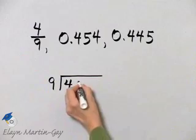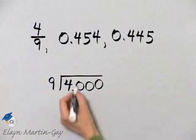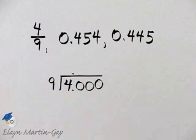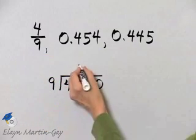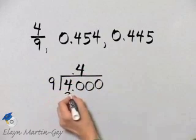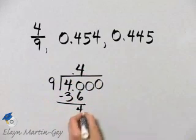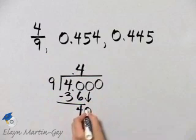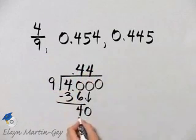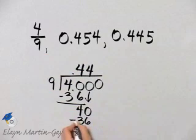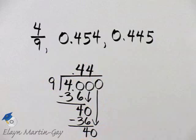And I'll put a decimal point and some zeros down. And now here's the decimal point in my quotient. How many times does 9 divide into 40? 4 times 9 is 36. And my difference is 4. Bring down a 0. Watch carefully. 4 times again, 4 times 9 is 36. My difference is 4. Bring down a 0.